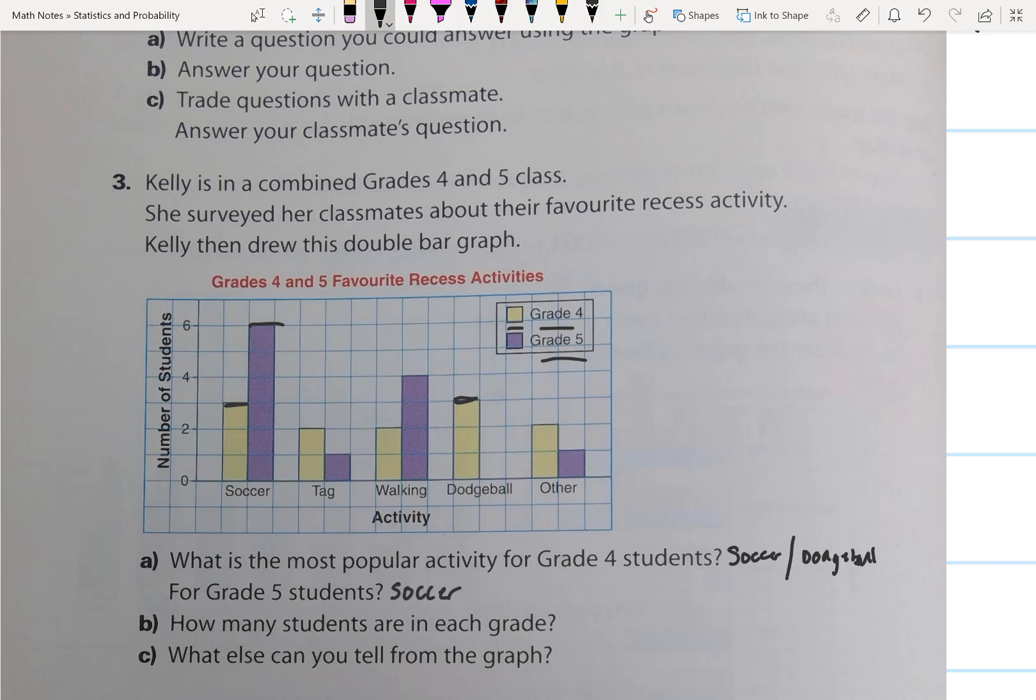How many students are in each grade? Well, to figure that out, we simply add up the bars. So this is 3, 2, 2, 3, 2. The number of grade 4 students is equal to 2 plus 3 plus 2 plus 2 plus 3, which is 12. 12 grade 4.